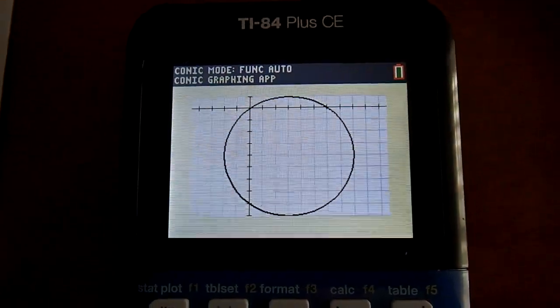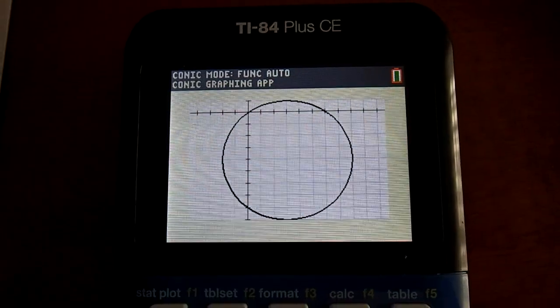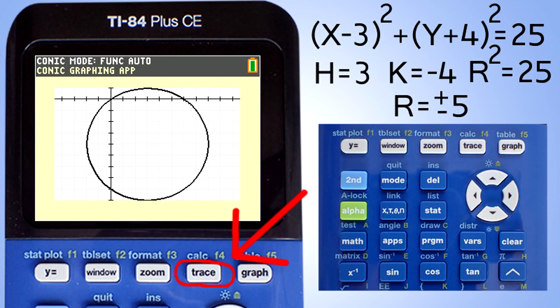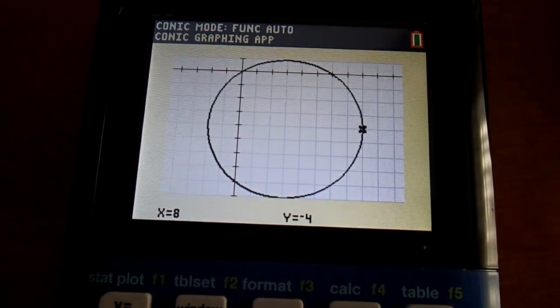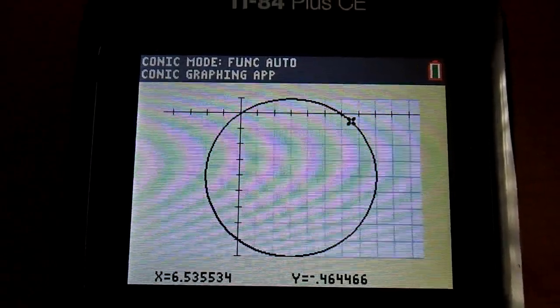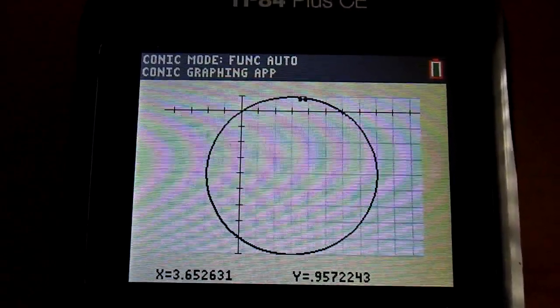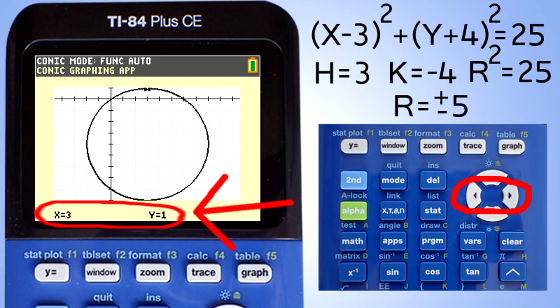Unfortunately the numbers of the graph are not labeled. But you can press this Trace button here and then use the right or left arrow buttons to trace around the circle. The calculator will display the coordinates of the trace on the bottom of the screen.